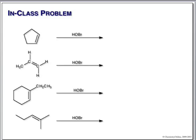Here we're adding HOBr. We have two things to remember: we're also going to add trans, but we have regiochemistry that we must respect for the hydroxyl group. The hydroxyl group will always add to the carbon that will give us the most stable carbocation — so it is Markovnikov relative to the hydroxyl group. In our first one, it's symmetrical, so it doesn't matter; we simply need to put hydroxyl on one carbon, bromine on the other, and show that they are trans.